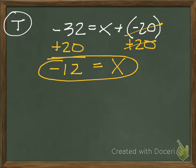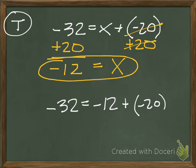Now, let's go ahead and plug that back in to see if that makes sense. So if I put negative 32 equals negative 12 plus negative 20. So negative 32 equals negative 12 plus negative 20. Again, we'll sing that song.